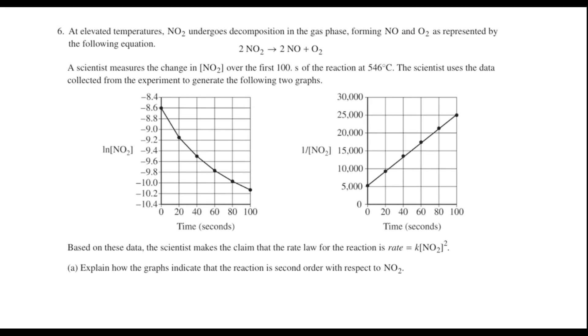Free response question number six is a short question. This is worth four points, and it looks like it's starting out with a kinetics question. At elevated temperatures, NO2 undergoes decomposition in the gas phase, forming NO and O2 as represented by the equation we see here. A scientist measures the change in NO2 concentration over the first 100 seconds of the reaction at 546 degrees Celsius. The scientist uses the data collected from the experiment to generate these two graphs, and the scientist makes the claim that the rate law for this reaction is rate equals K times the concentration of NO2 squared.